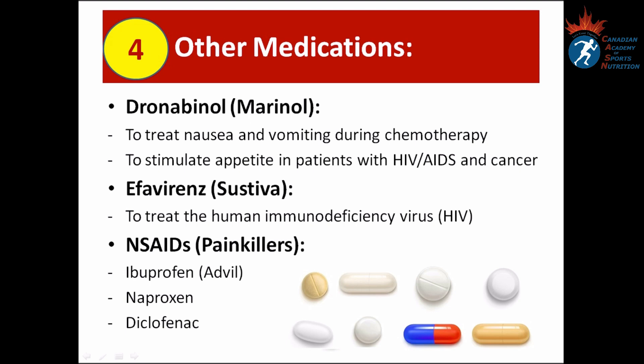Number four, there are also other medications that can cause false positives for THC. Dronabinol or Marinol is used to treat nausea and vomiting during chemotherapy for cancer, and also to stimulate appetite in patients with HIV, AIDS, and cancer. The second medication is efavirenz or Sustiva, used to treat HIV. And the famous painkillers ibuprofen or Advil, naproxen, and diclofenac. If you are taking any of these medications for any reason, you should report them at the Doping Control Station.